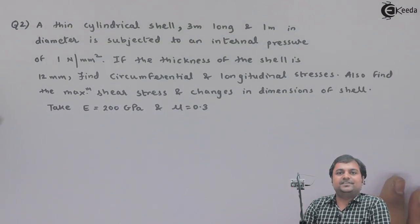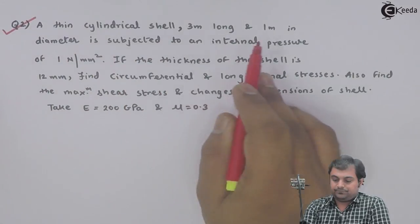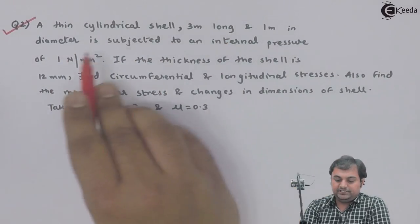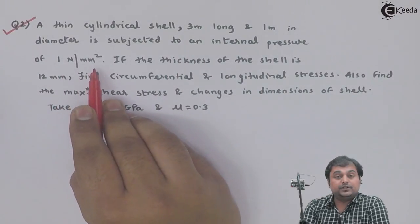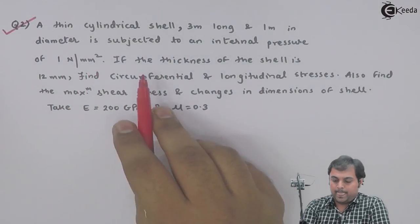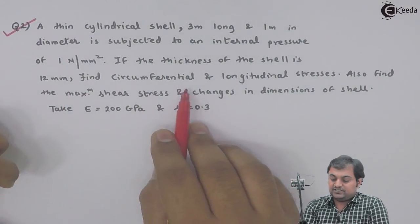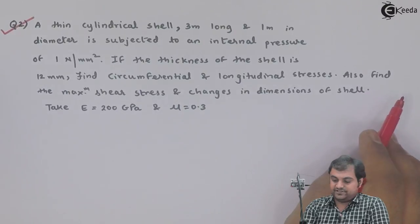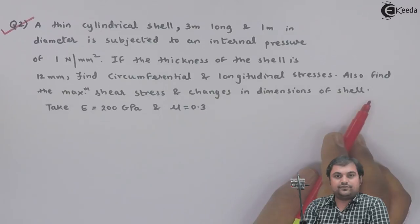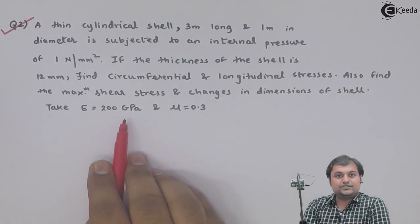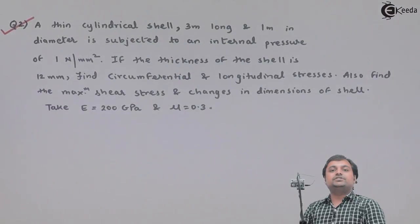Let us take the second question on thin cylinders. A thin cylindrical shell 3 meters long and 1 meter in diameter is subjected to an internal pressure of 1 Newton per mm square. If the thickness of the shell is 12 mm, find circumferential and longitudinal stresses. Also find the maximum shear stress and changes in dimensions of the shell. Take E as 200 GPa and mu as 0.3.